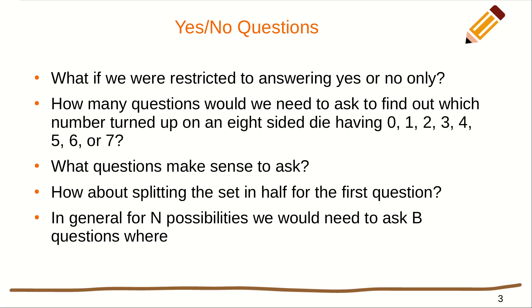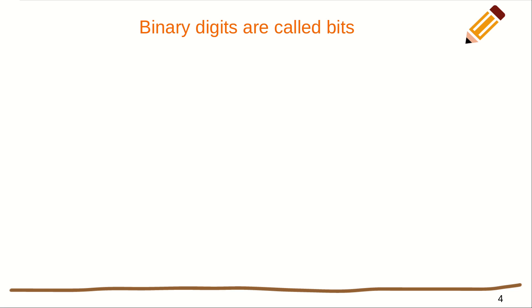In general, for n possibilities, we'd need to ask b questions, where b is log base 2 of n. Binary digits are called bits.